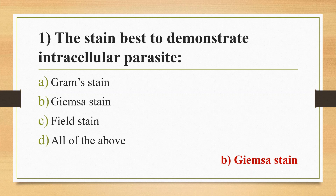Jamesa stain is a Romanowski stain, composed of eosin and methylene blue. Eosin stains the parasites' nucleus red, while methylene blue stains the cytoplasm blue. Let's go through the other options.